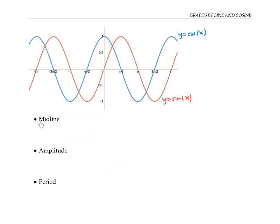We can also use the words midline, amplitude and period to describe these two functions. The midline is the horizontal line halfway in between the maximum and minimum points. Here, the midline is y equals zero.